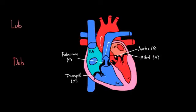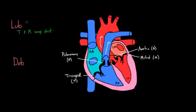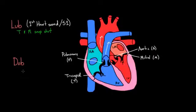When the tricuspid valve and the mitral valve snap shut, that makes a noise. When T and M snap shut, that makes the sound we call lub — the first heart sound. Sometimes people call it S1. So if you hear S1, you know they're talking about that same exact thing.